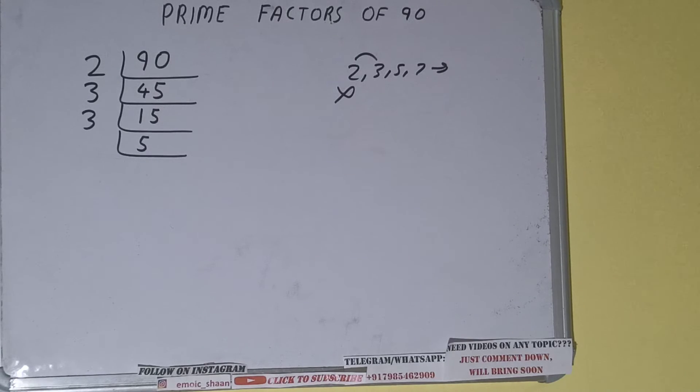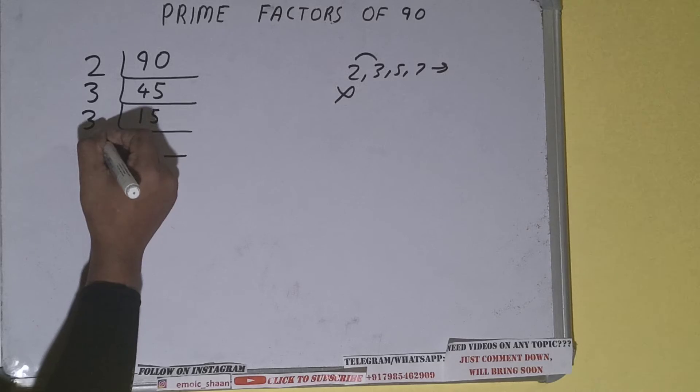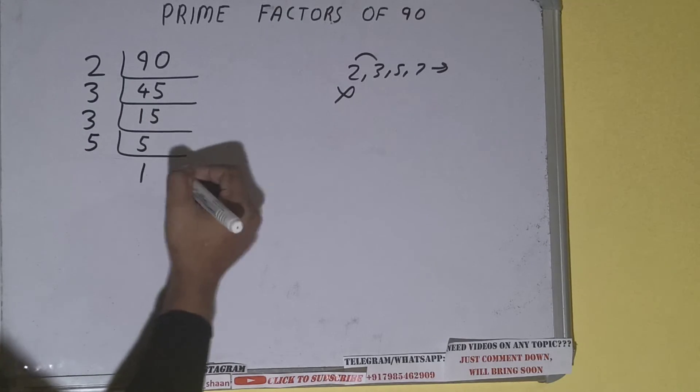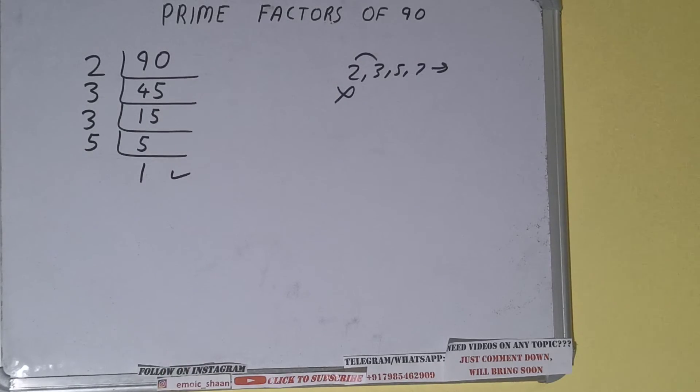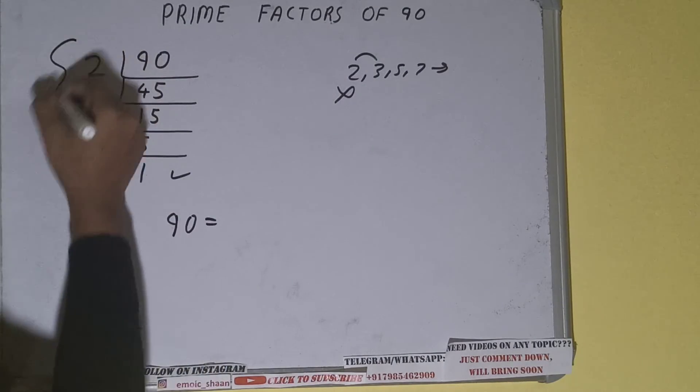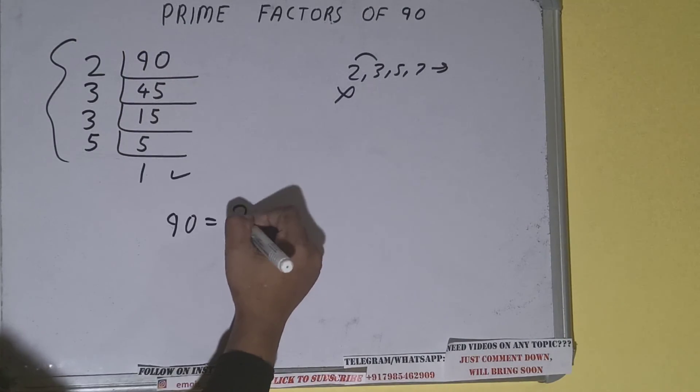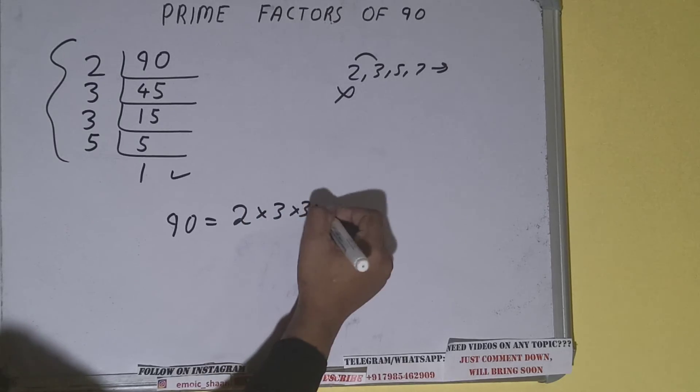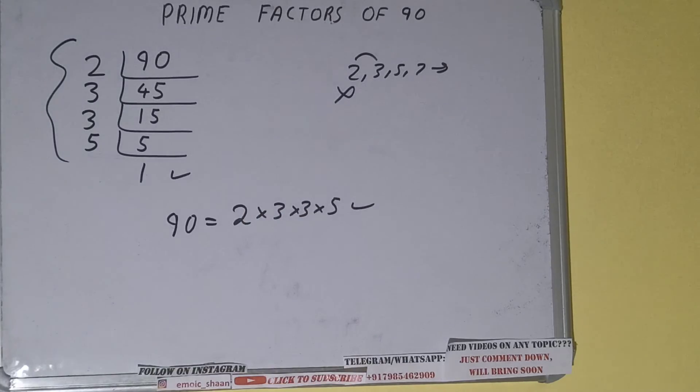Five is a prime number, that means it can be divided by itself only. Once we do so, we'll be getting one. Once we get one, we need to stop and do one last thing. Prime factors of 90 will be whatever we have on the left hand side, that is 2 × 3 × 3 × 5. That would be the answer.